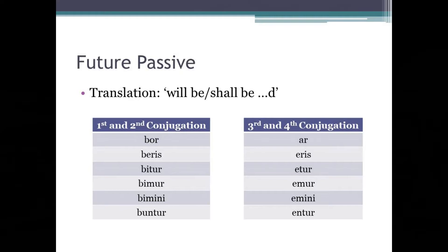Now let's move on and have a look at future passives. A future passive is translated to mean 'will be' or 'shall be.' For first and second conjugation verbs, the endings are as follows: -bor, -beris, -bitur, -bimur, -bimini, -buntur. And for third and fourth conjugation verbs, the endings are like this.